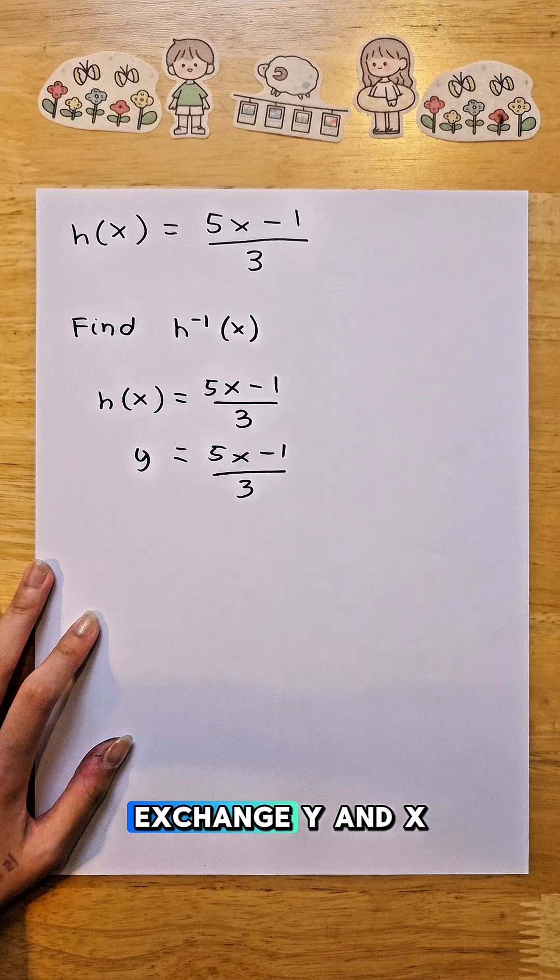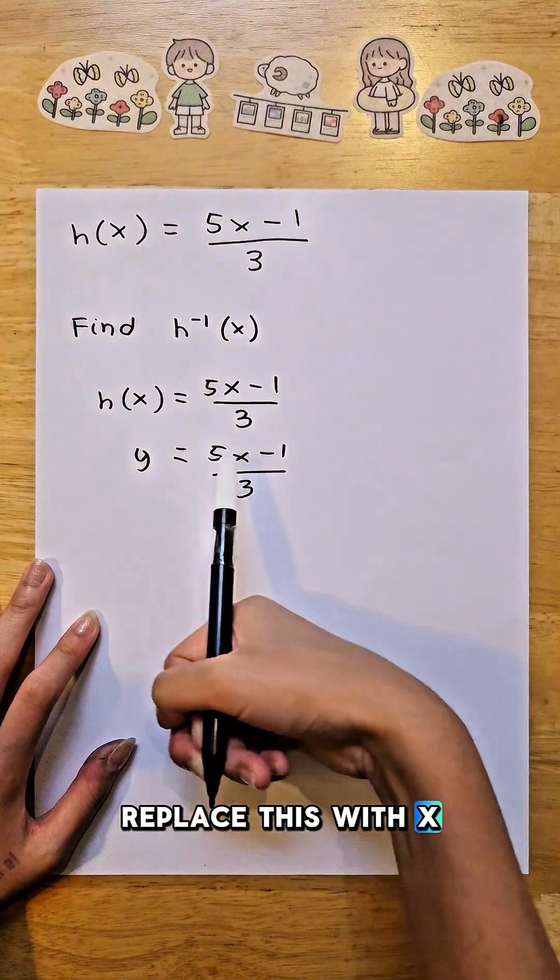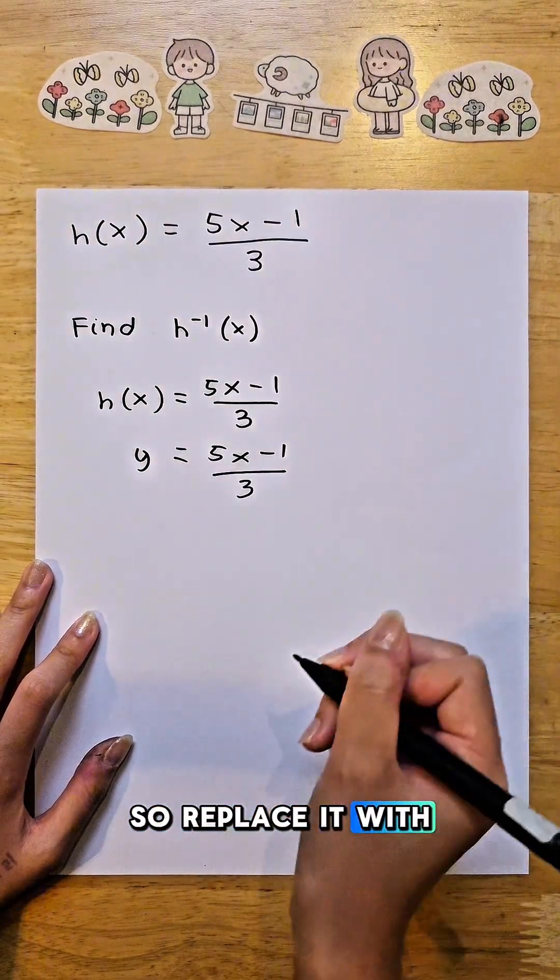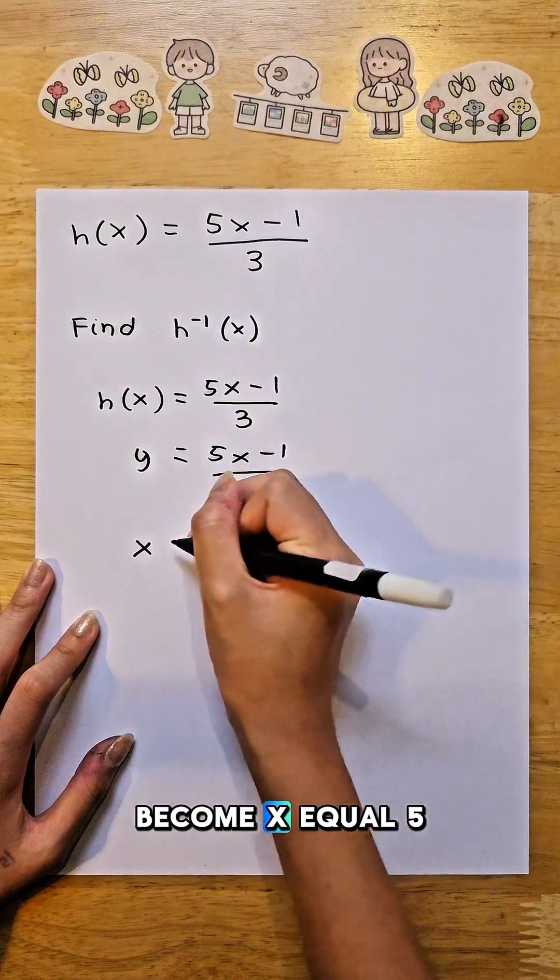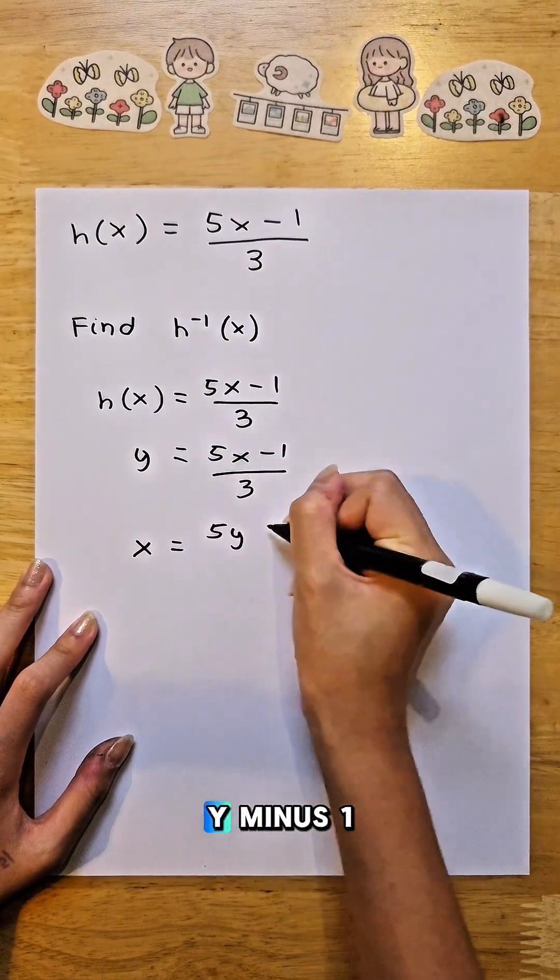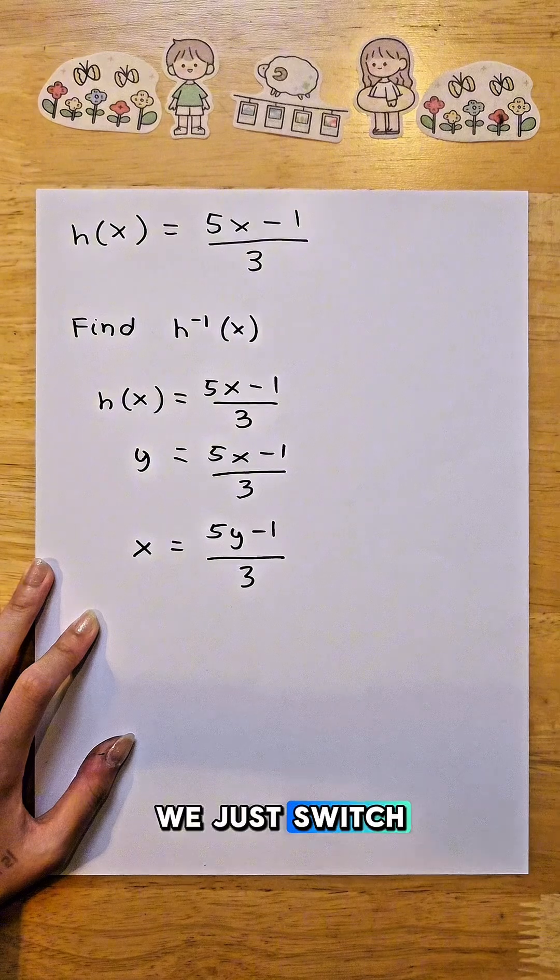Now we have to exchange y and x places. Since y is here, replace this with x, and x is here, so replace it with y. So it's going to become x = (5y - 1)/3. We just switch their places.